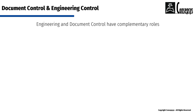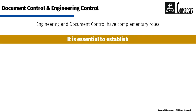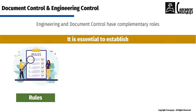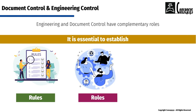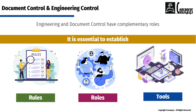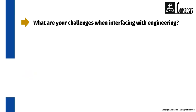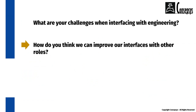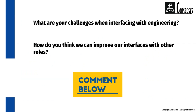We have seen that document control and engineering control have complementary roles, and that it is essential that we establish the rules of the work relationships — the rules of who does what and when — and the tools for effective communication. What are your challenges when interfacing with engineering? How do you think we can improve our interfaces with other roles? Let us know in the comments below.